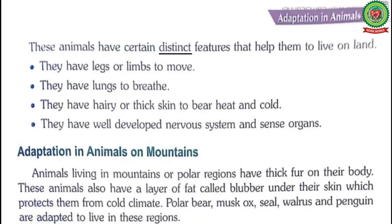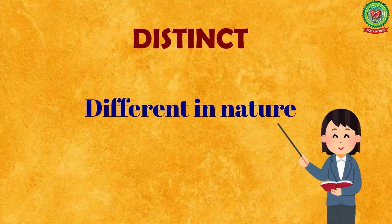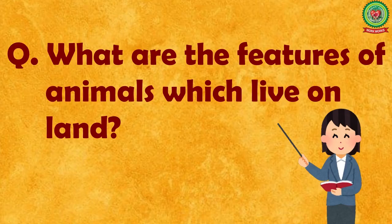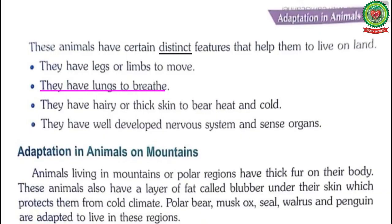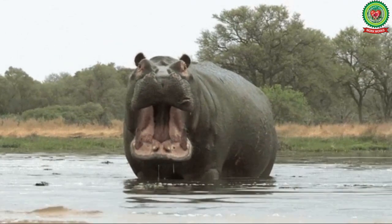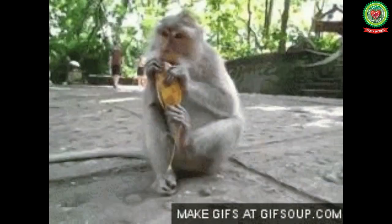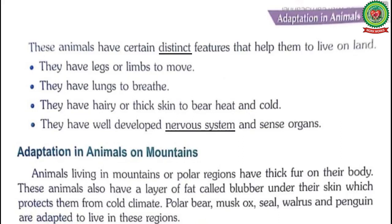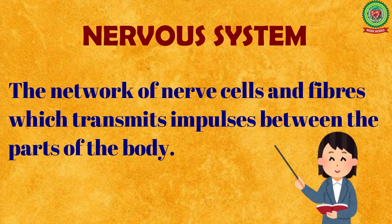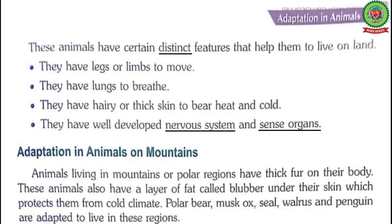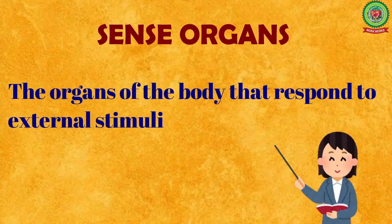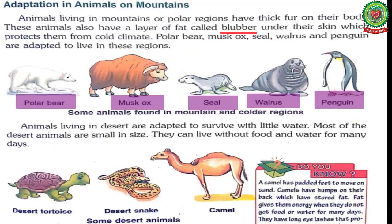Come to page number 41. These animals have certain distinct features that help them to live on land. Underline the word distinct and write down its meaning: different in nature. The features of animals which live on land are: they have legs or limbs to move, they have lungs to breathe, they have hairy or thick skin to bear heat and cold, and they have a well developed nervous system and sense organs. Underline nervous system — meaning: the network of nerve cells and fibres which transmits nerve impulses between the parts of the body. Underline sense organs — meaning: the organs of the body that respond to external stimuli.